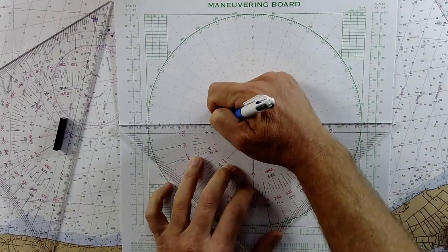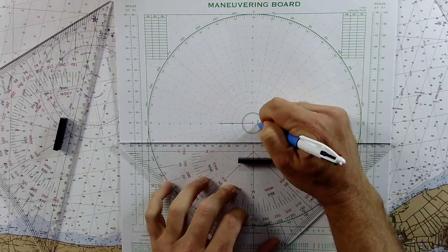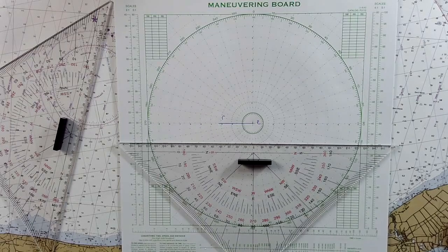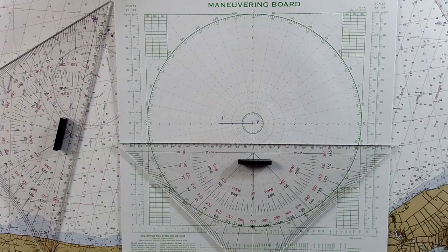All right, so I've got my point here, and that represents E to R, which is our course in speed. E to R is our course in speed.